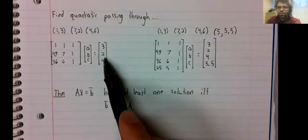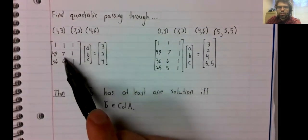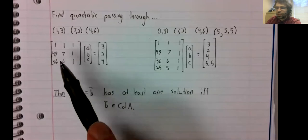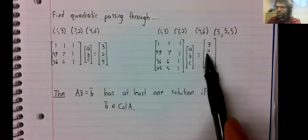So this vector is in the column space of the matrix. This vector wasn't.